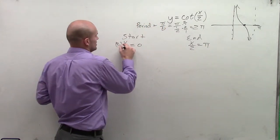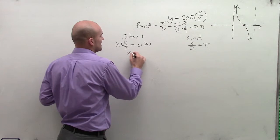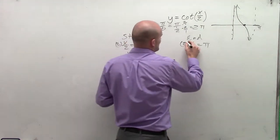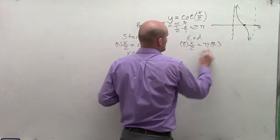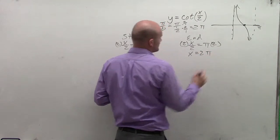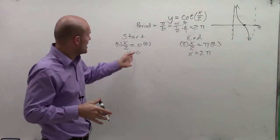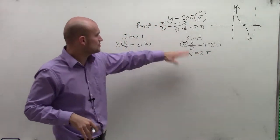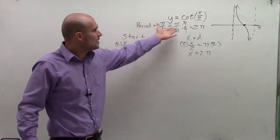Now by solving for x, multiply by 2 on both sides, and I get x equals 0, multiply by 2 on both sides, and I get x equals 2 pi. So therefore, I am now going to graph between 0 and 2 pi, which we notice is correct, period is now 2 pi.